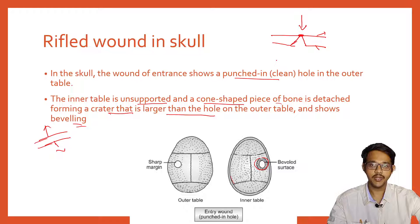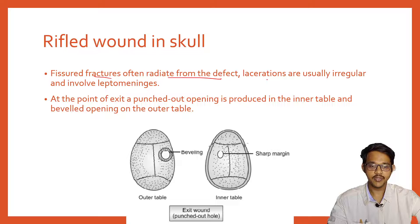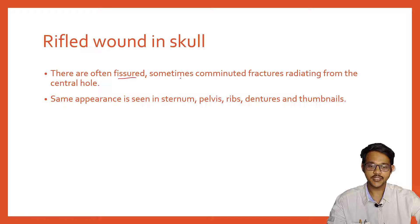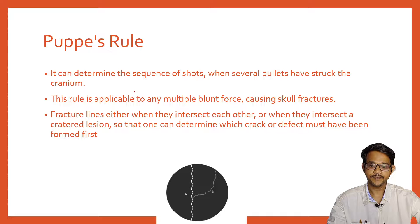Because the inner table is unsupported, the wound is accompanied by fissure fractures radiating from the defect. It may also lacerate the leptomeningeal vessels. At the point of exit, a punched-out opening is produced in the inner table and beveling in the outer table — the opposite of what occurs at the entry wound. Fissure fractures and sometimes comminuted fractures are also seen radiating from the center hole. The same appearance is seen in other flat bones such as the sternum, pelvis, ribs, and thumbnails.